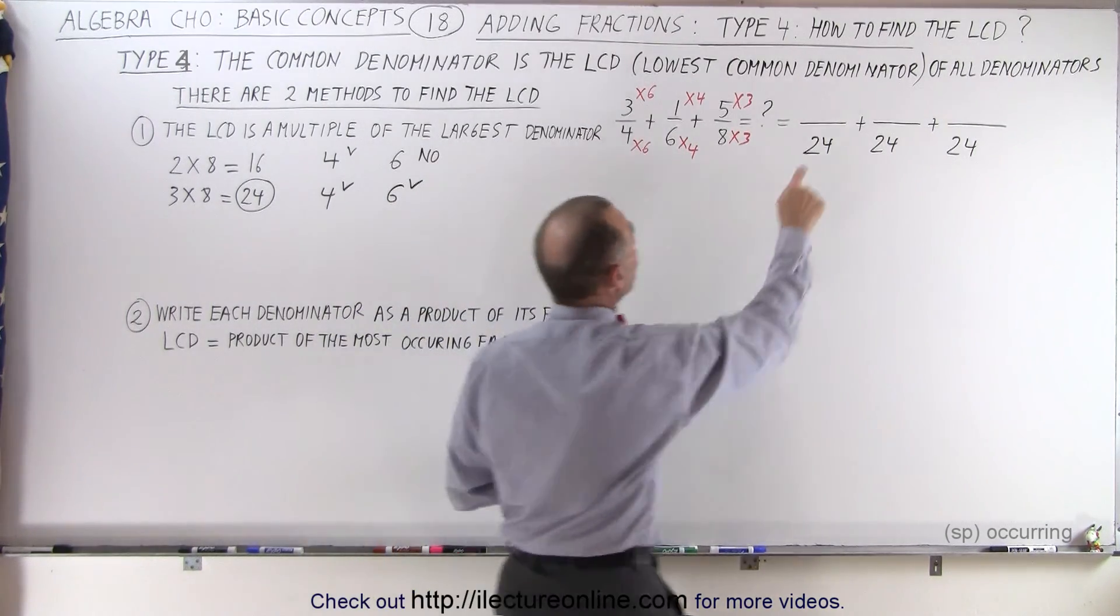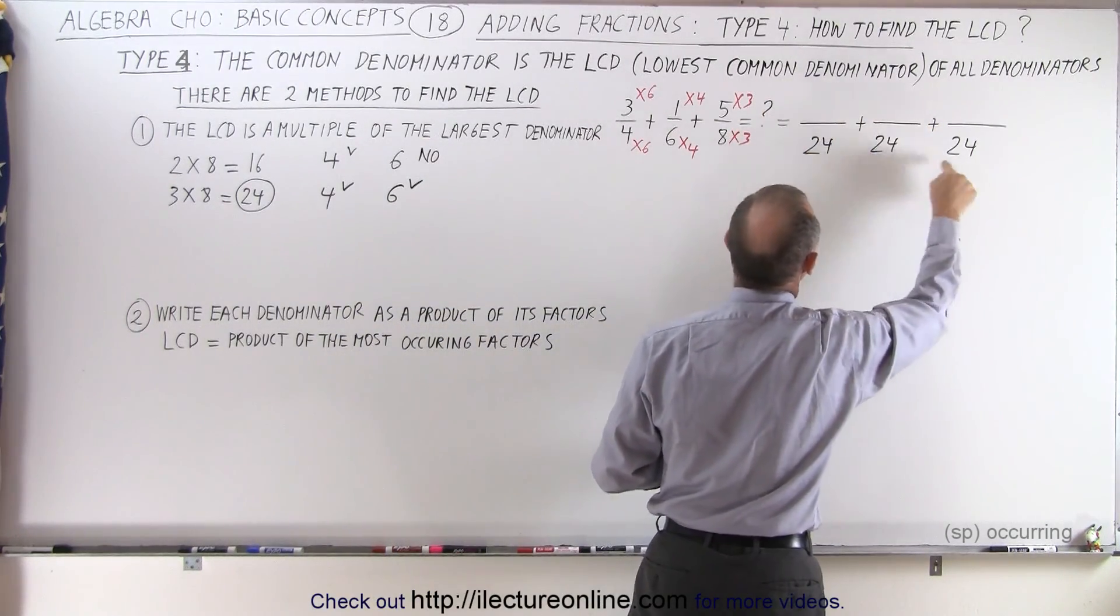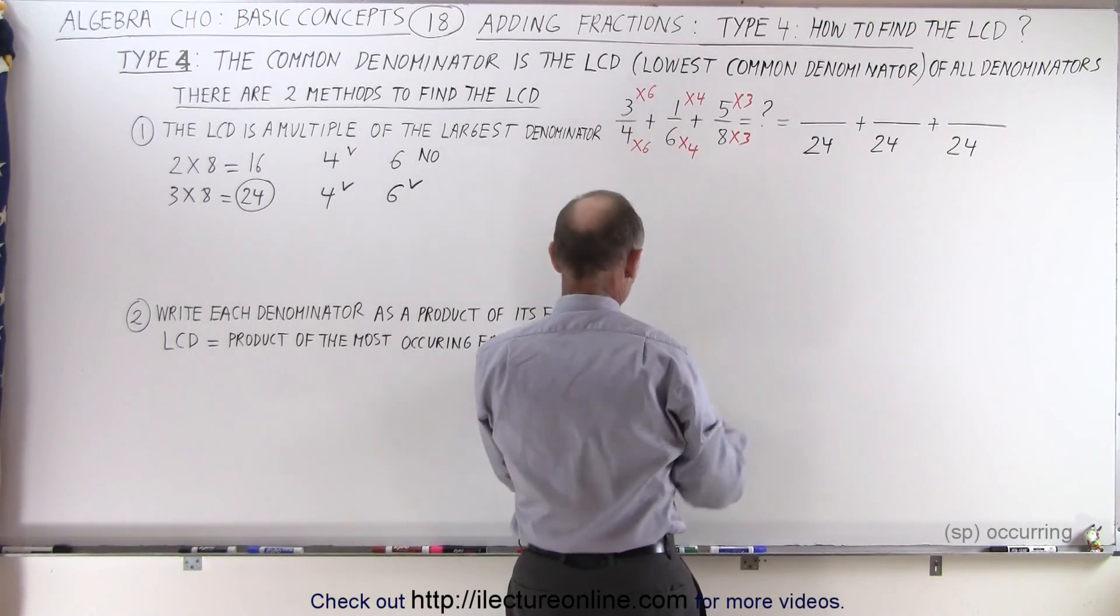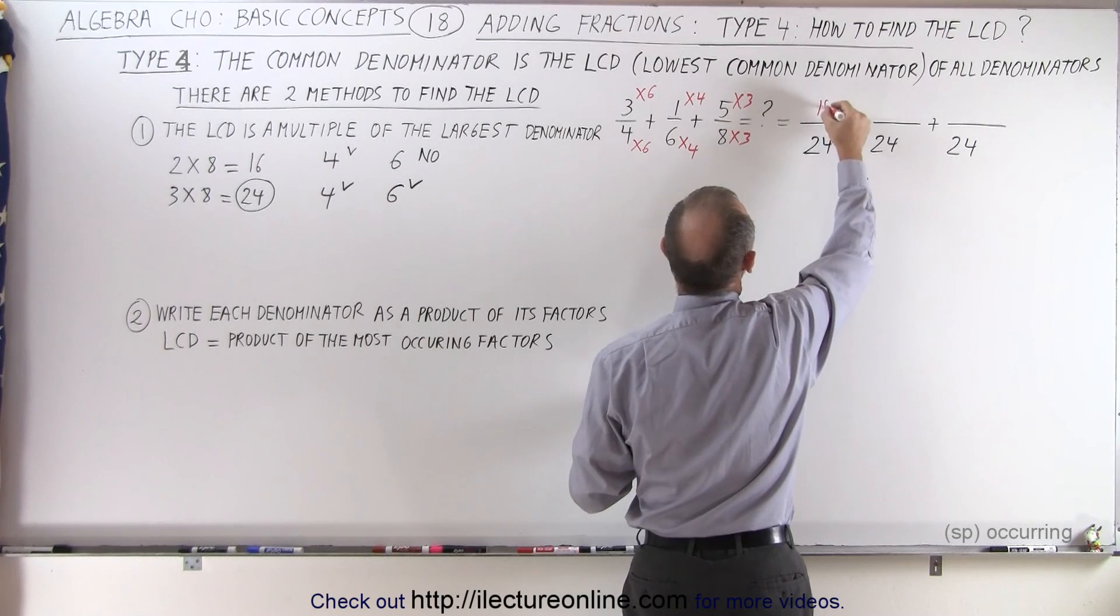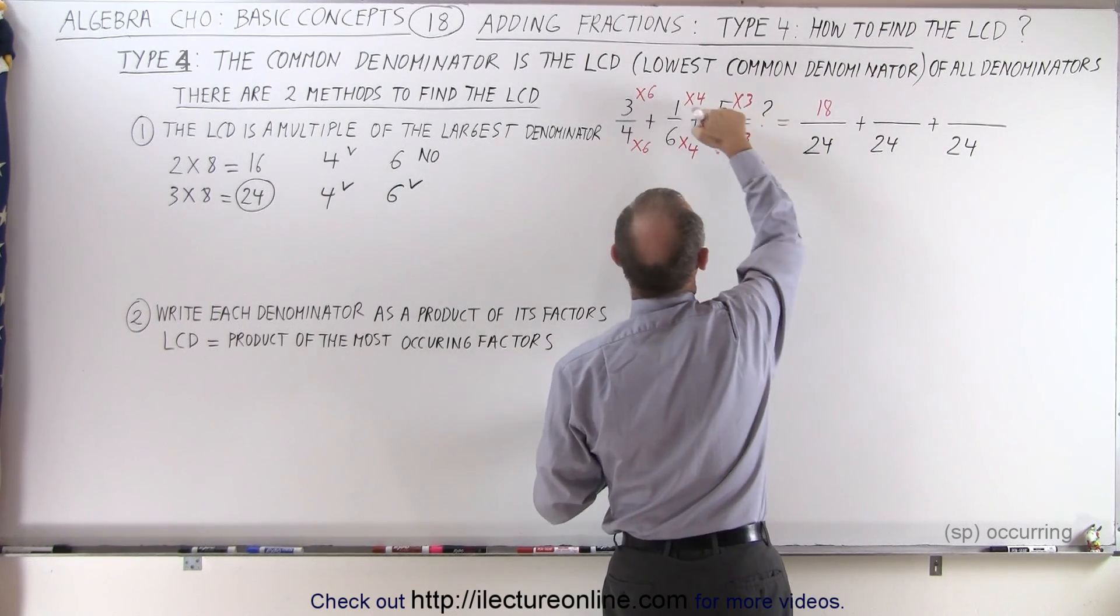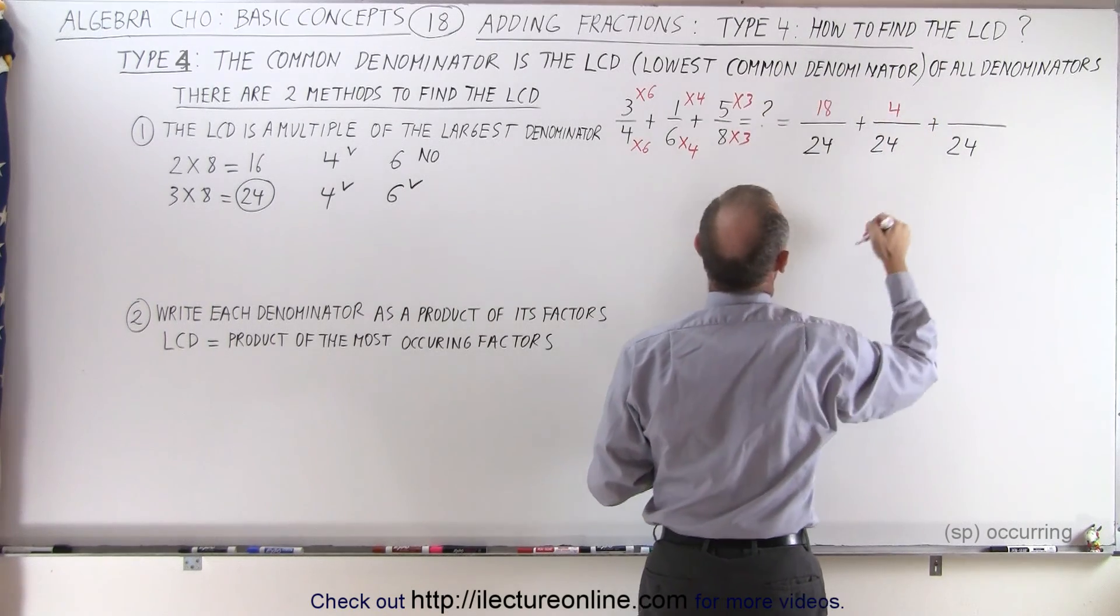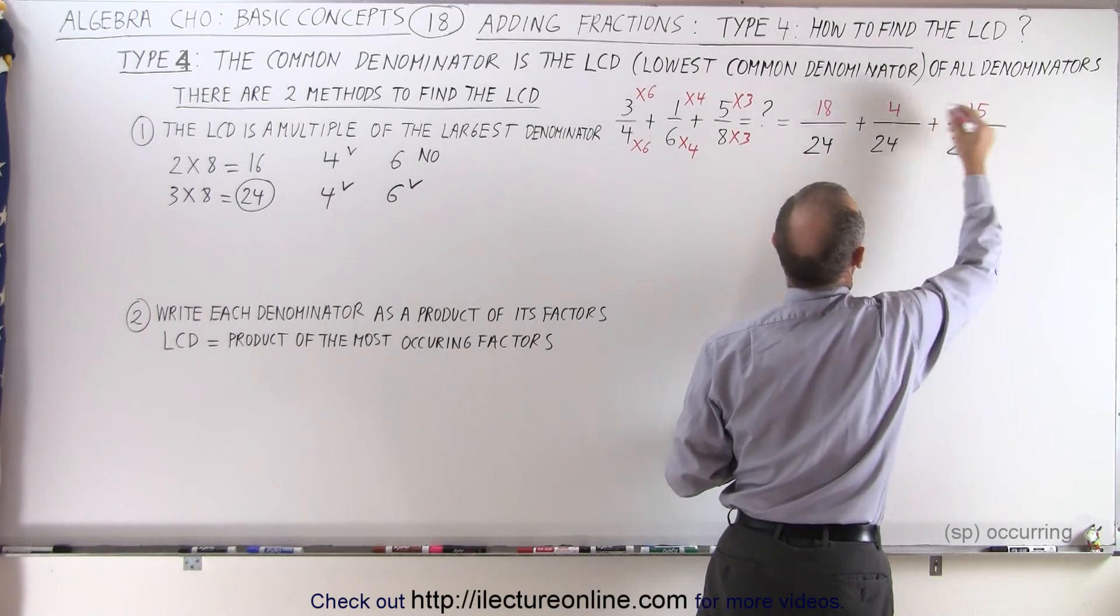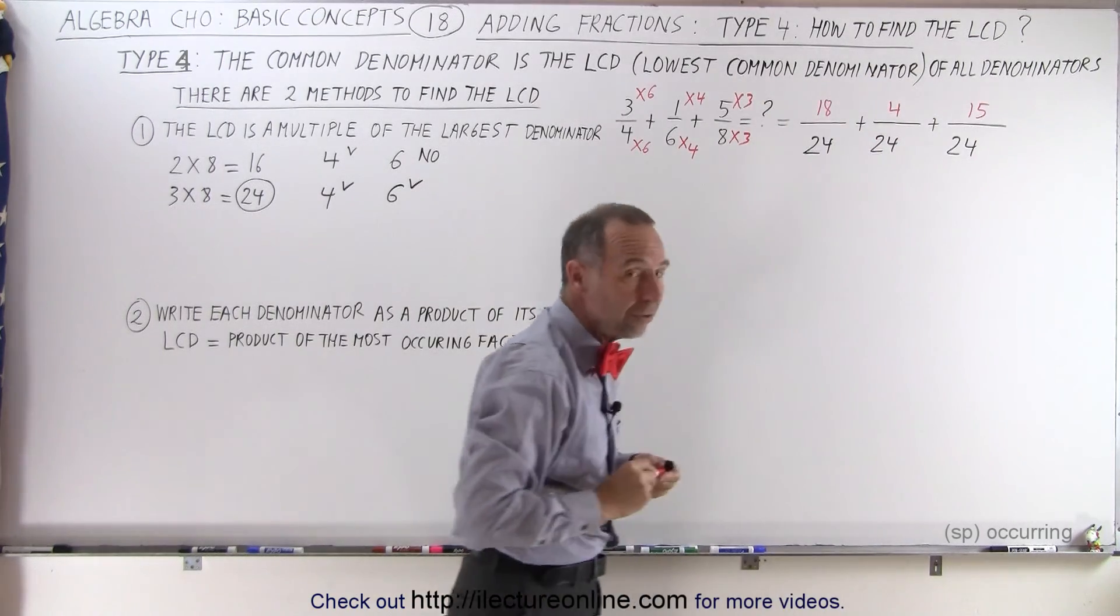And so now we end up with our new numerators corresponding to the new denominators. So the denominator is 24. 3 times 6 gives us a new numerator of 18. 4 times 6 gave us 24, 4 times 1 gives us 4. And 3 times 8 gave us 24, 3 times 5 gave us 15. So those are the new corresponding numerators.